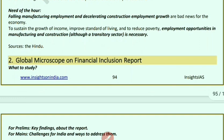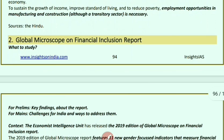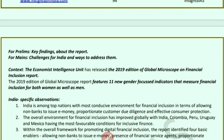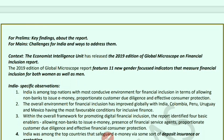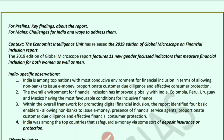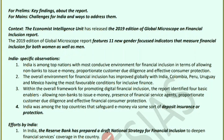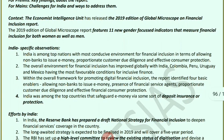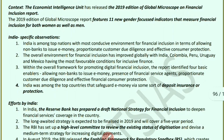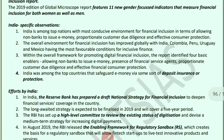Next, the Global Microscope on Financial Inclusion Report. The Economist Intelligence Unit released its 2019 edition, featuring 11 new gender-focused indicators measuring financial inclusion of both women and men. India is among the top nations with a conducive environment for financial inclusion, with facilities ranging from non-bank services to e-money. The overall environment for financial inclusion has improved globally, including India, Colombia, Peru, Uruguay, and Mexico.